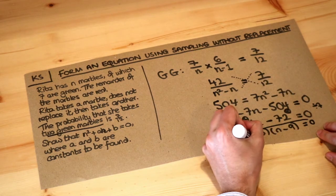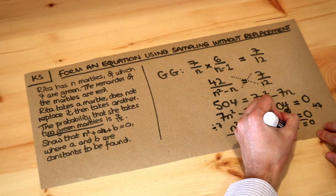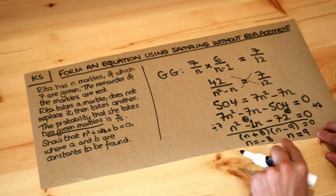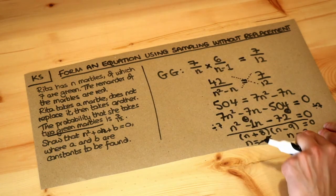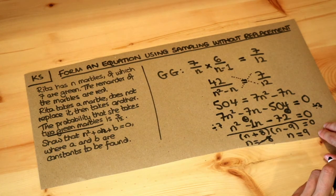And that means that n is either minus 8 or n is 9. But clearly, we can't have minus 8 marbles, can we? We can't have a negative number of marbles. So the solution is that n is 9. There are 9 marbles in total.